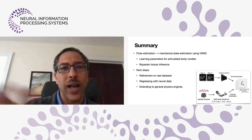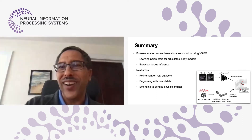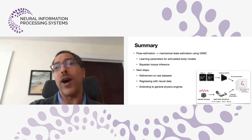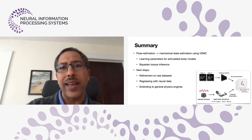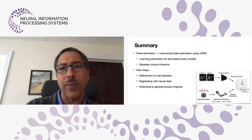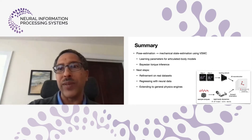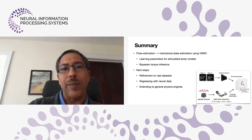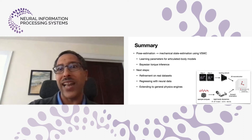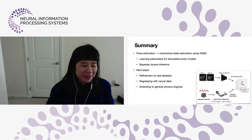CJ Taylor from GRASP Lab at the University of Pennsylvania shares his perspective: being able to build differentiable models to help model actual robotic systems is very compelling. For legged systems walking in complicated environments where we don't have wonderful models to begin with, it opens up the opportunity to learn better models with better predictive properties, and also achieve control in environments where existing models are frankly less than adequate.